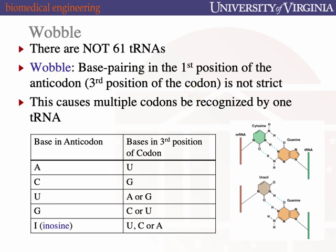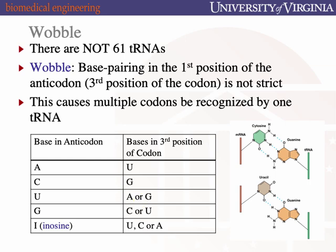The wobble position of a codon is typically the third position, read five-prime to three-prime in the mRNA. Not every codon has a wobble position, but several do. Depending on the identity of the anticodon base, it dictates the specificity of the codon tolerated. If the anticodon has A, it will hybridize uniquely to U, but there are other bases in the first position of the anticodon that can tolerate multiple bases in the mRNA. There's a special modified nucleic acid called inosine that is quite flexible — it can accommodate three different bases in the wobble position of the mRNA.